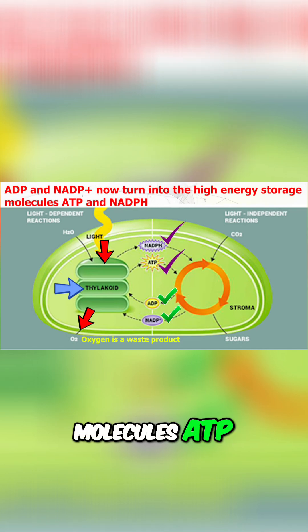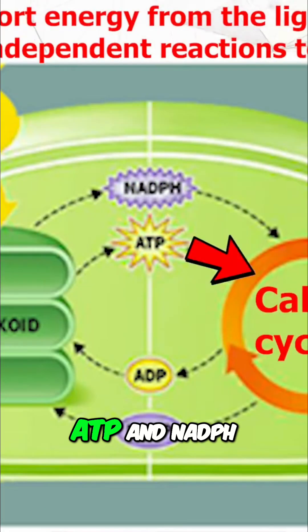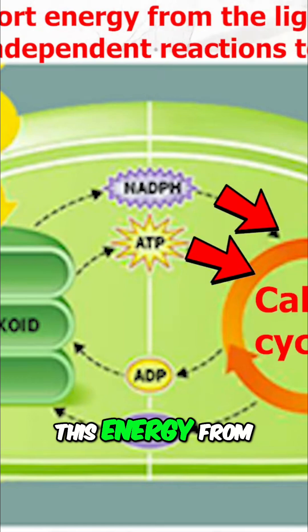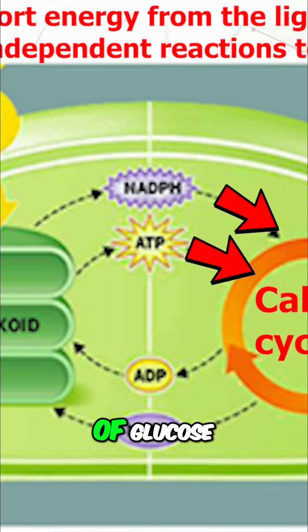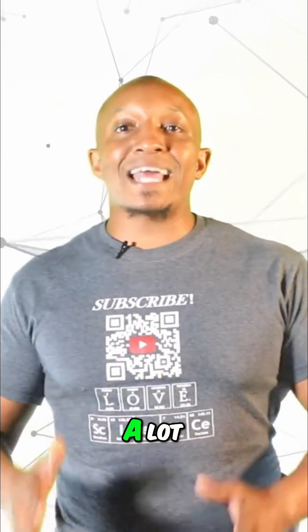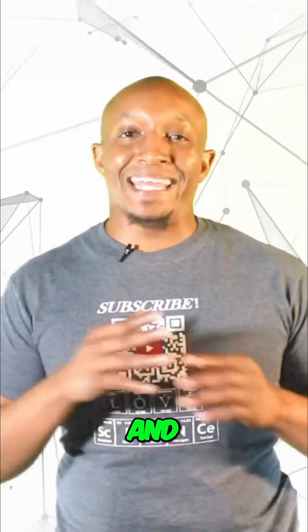ATP and NADPH transport this energy from the light-dependent reactions to light-independent reactions to fuel the production of glucose sugars. It may sound like a lot, so let's rewind it all the way back and hit the basics.